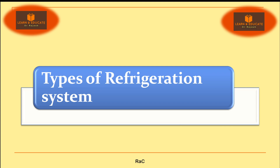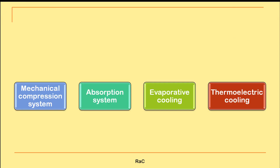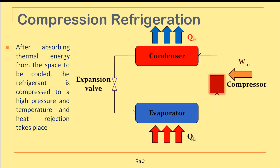Warm welcome, dear students. In continuation with the previous session, we are going to discuss the various types of refrigeration systems. By now you know what a refrigeration system is and the different terms involved. Today we will see the different types — mainly four: mechanical compression system, absorption system, evaporative cooling, and thermoelectric cooling.